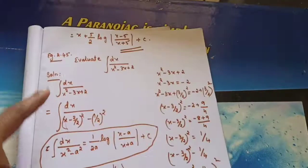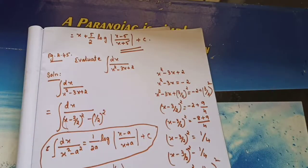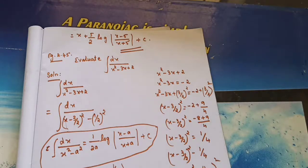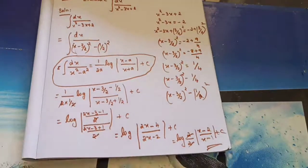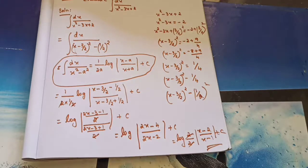So what you need to do: first check whether the denominator is in the form of a quadratic equation. If yes, use the completing the square method, then substitute and use the formula dx/(x² minus a²). Cancel any common terms, and you will get the answer.